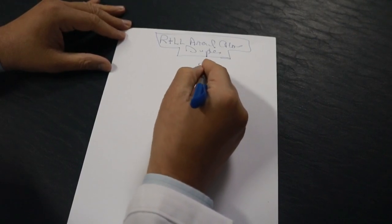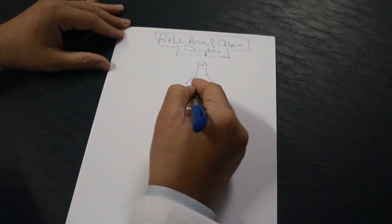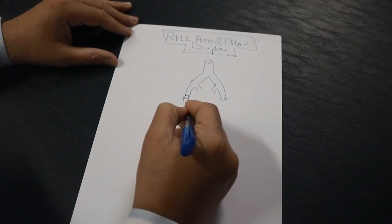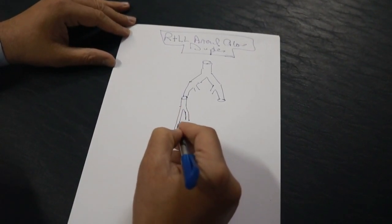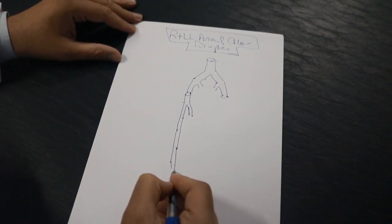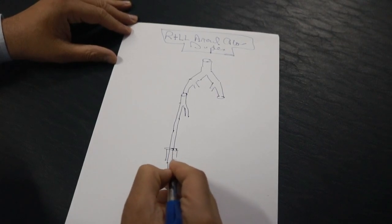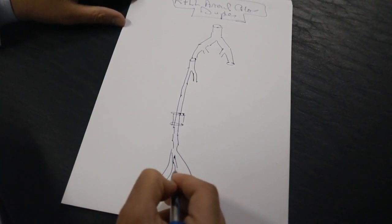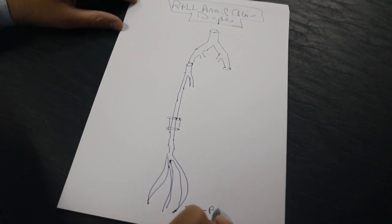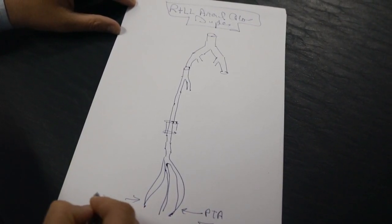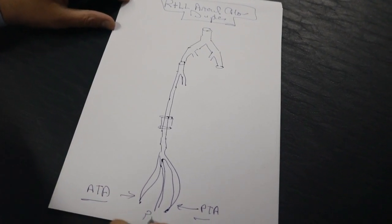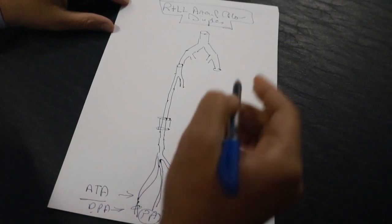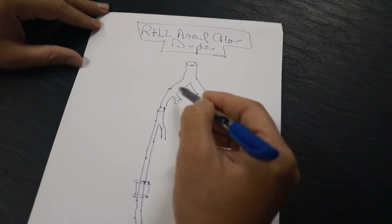That means we can draw the aorta and external iliac arteries like this, then the common femoral, profunda, and superficial femoral. This is popliteal here. This is the adductor canal level, then the trifurcation. This is posterior tibial artery which is medial, this is anterior tibial artery which is lateral, this is peroneal artery, and this is dorsalis pedis artery.